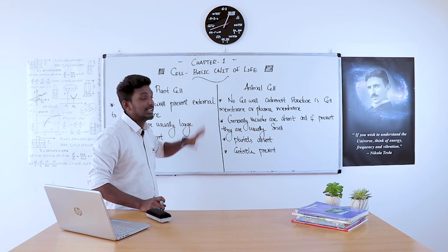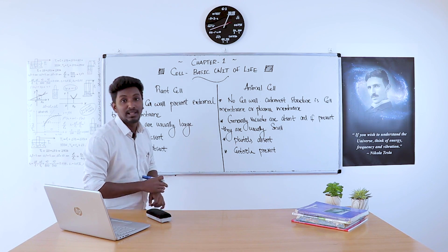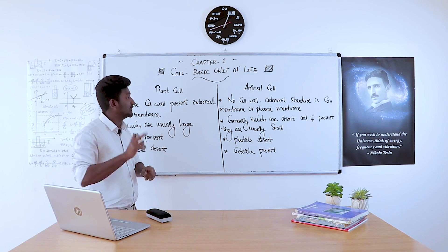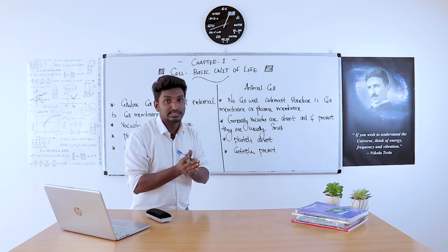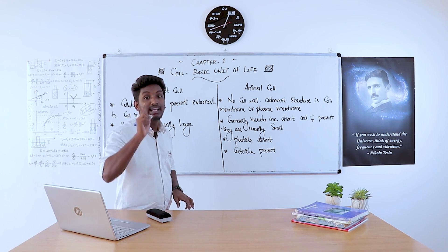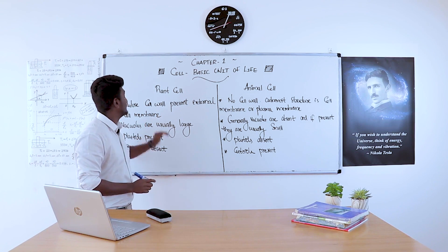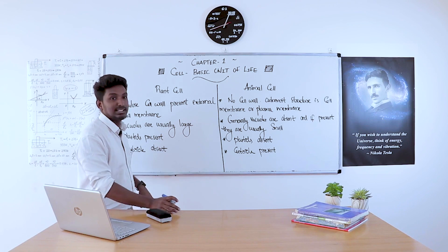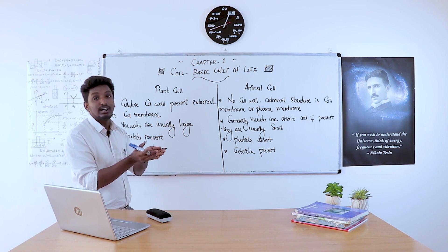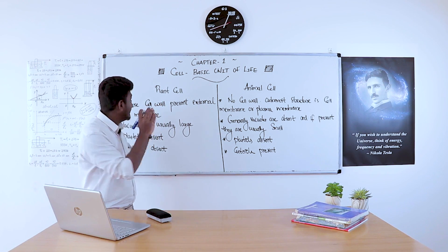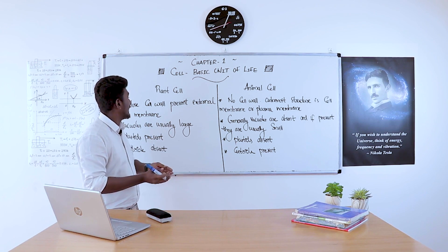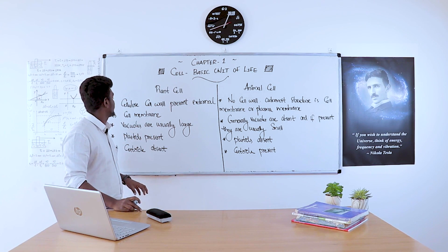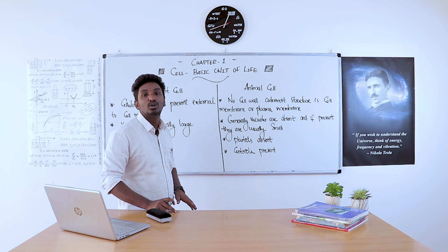Now here is the difference between a plant cell and an animal cell. For a plant cell, a cellulose cell wall is present external to the cell membrane — that means in addition to the cell membrane, there is one more coating made up of cellulose. That additional coating outside the cell membrane is known as the cell wall. In the case of an animal cell, there is no cell wall.